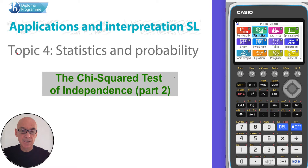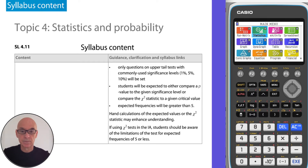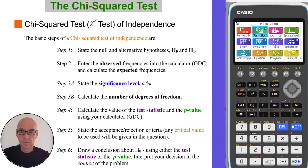This video is on the chi-squared test of independence. It's the second of two videos to help you with this topic. The syllabus is shown for your reference, and it's assumed that you're familiar with the basic steps of a chi-squared test of independence, as shown here.